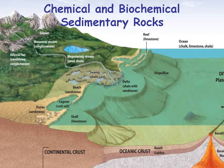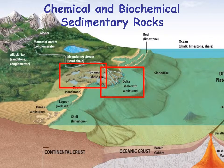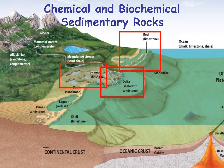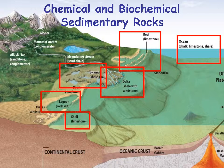Now we're going to talk about chemical and biochemical sedimentary rocks. In swamps, you can get coal or peat deposited. In deltas, you can get reef limestone, and rock salt deposited in a lagoon. Limestone can be deposited on a shelf or in chalk form. Chalk is a biochemical rock deposited out on the open ocean.